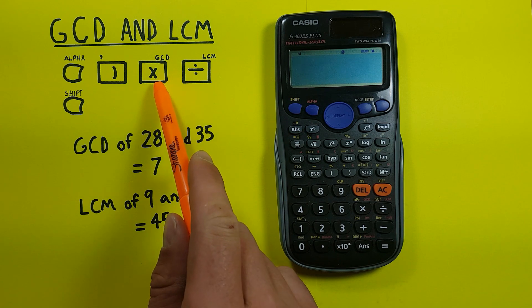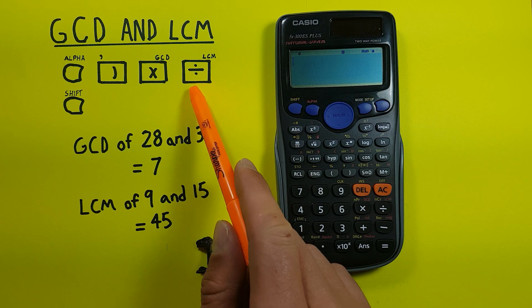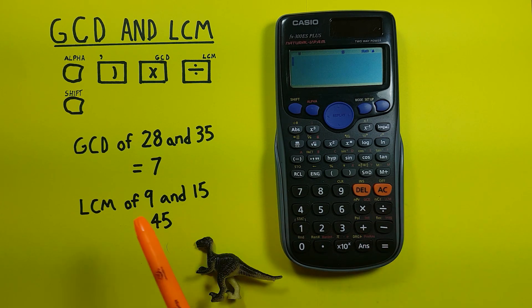the multiplication key looks like this located here, the division key looks like this located here, and the shift key looks like this and is located here.